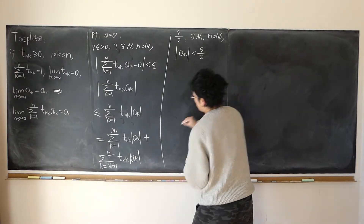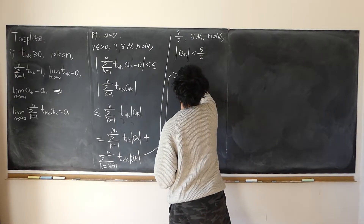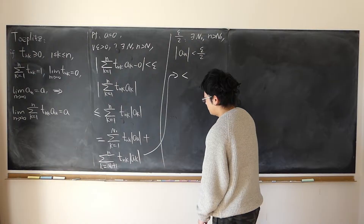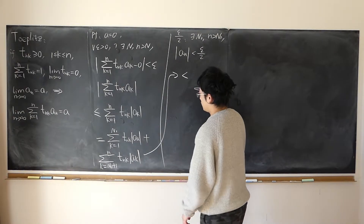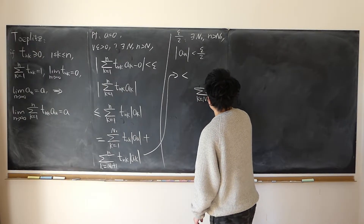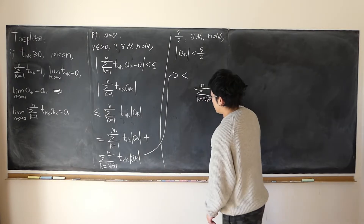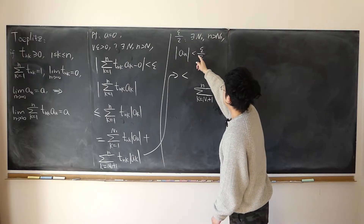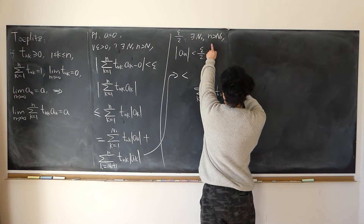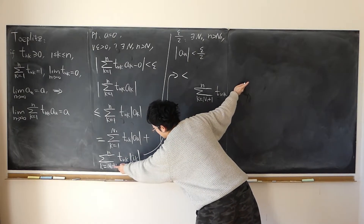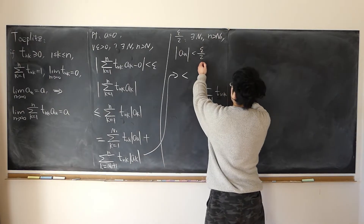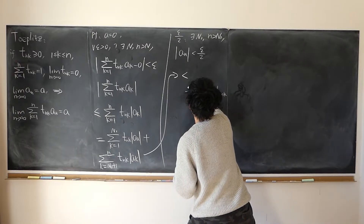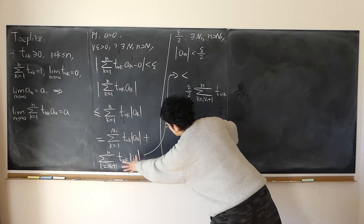I can loosen the inequality a little bit. For the second sum—sigma from N1+1 all the way up to little n of t(n,k) times |a(k)|—this is already small enough as long as little n is large enough, because the partial sum already starts from N1+1. So it can be replaced by half epsilon.